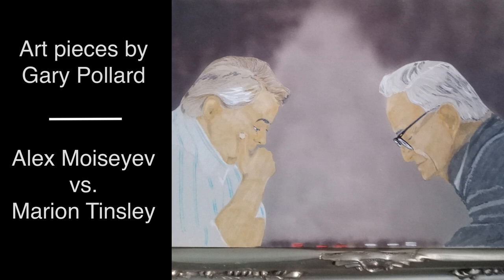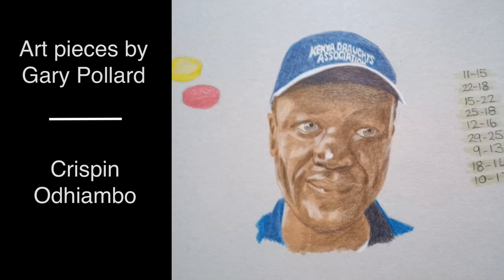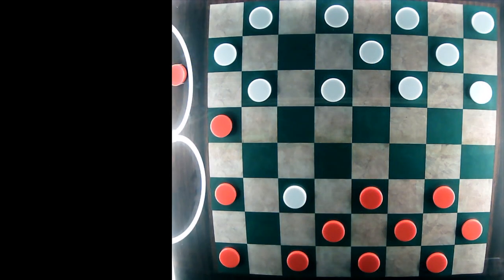My favorite piece is an imagined match between two giants of the game, Alex Moiseyev and Marion Tinsley. Gary also created portraits of world champion Lubavolo Kandlo and recent world qualifier runner-up superstar from Kenya, Crispin Odiambo. Amazing pieces from a great artist. Thank you, Gary.